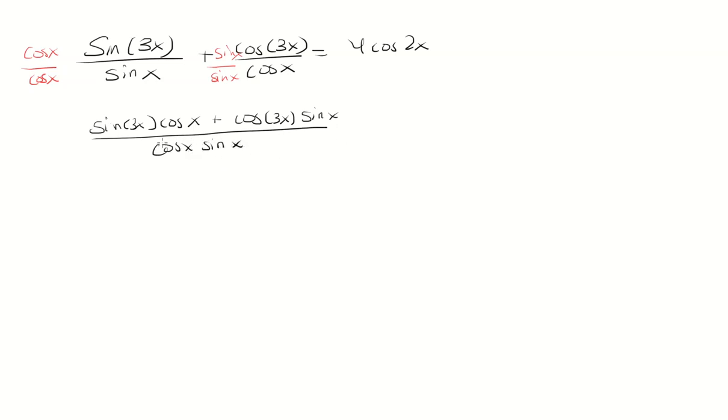And now notice the numerator is just sine 3x plus x, because when you have sine of a plus b, that's sine a cosine b plus cosine a sine b.